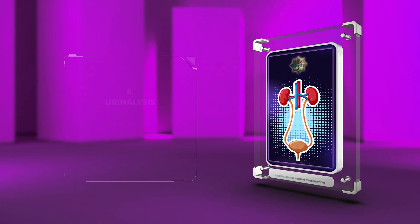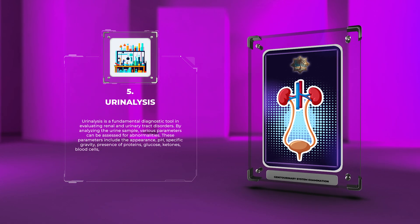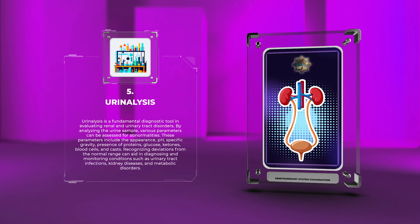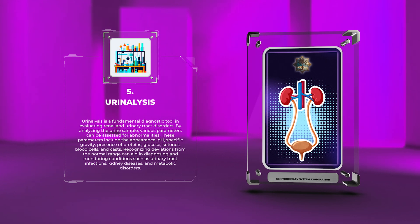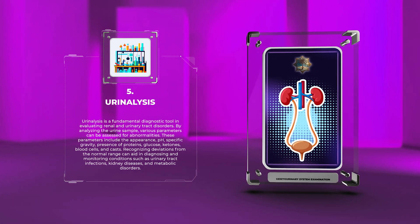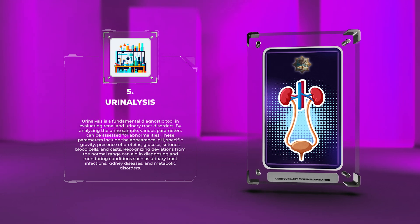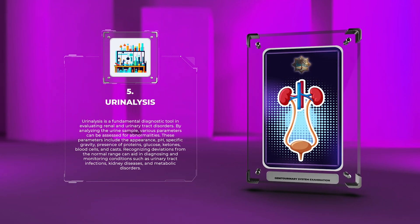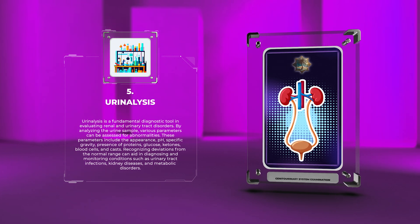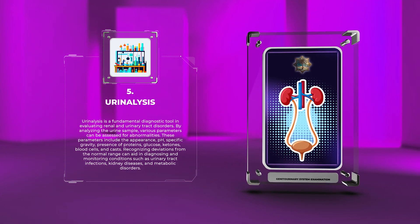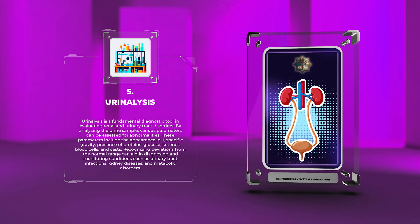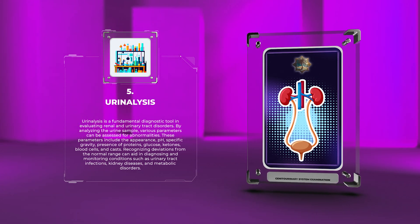Urinalysis is a fundamental diagnostic tool in evaluating renal and urinary tract disorders. By analyzing the urine sample, various parameters can be assessed for abnormalities. These parameters include the appearance, pH, specific gravity, presence of proteins, glucose, ketones, blood cells, and casts. Recognizing deviations from the normal range can aid in diagnosing and monitoring conditions such as urinary tract infections, kidney diseases, and metabolic disorders.